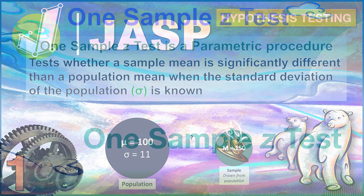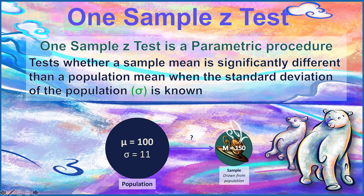What is a one-sample z-test? It is a parametric procedure that tests whether a sample mean is statistically significantly different than a population mean, and we use it when we know the standard deviation of the population.